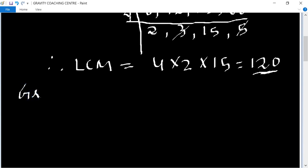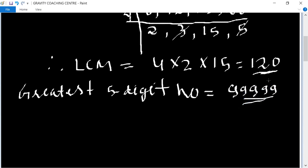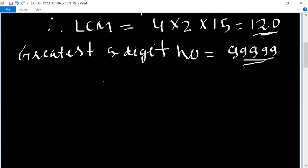So the greatest 5-digit number, we know that the greatest 5-digit number equal to 99999. And now we divide 99999 by 120.